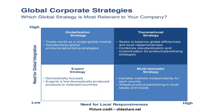Global corporate strategies summary: Global strategy — treats the world as a single global market; standardizes global products and advertising strategies. Transnational strategy — seeks to balance global efficiencies and local responsiveness; combines standardization and customization for product and advertising strategies. Export or international strategy — domestically focused; exports a few domestically produced products to selected countries. Multi-domestic strategy — handles markets independently for each country; adapts products and advertising to local tastes and needs.